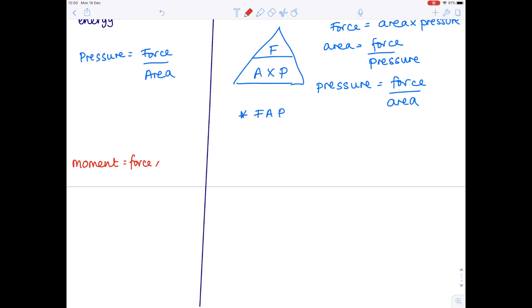Moment equals force times distance. So that's all to do with turning effects. This does fit into a formula triangle. So we can see that moment equals force times distance. Force equals moment divided by distance. And therefore, lastly, distance equals moment divided by force.